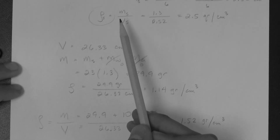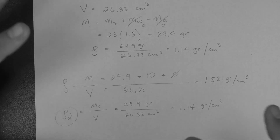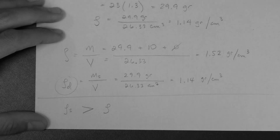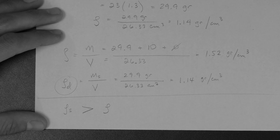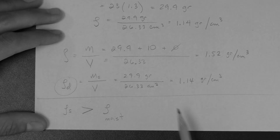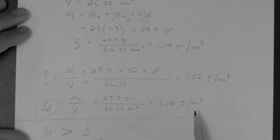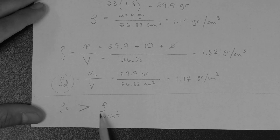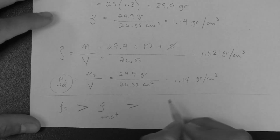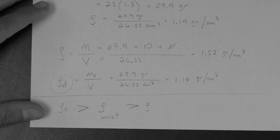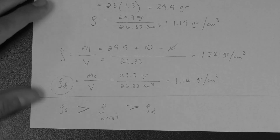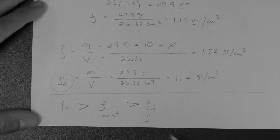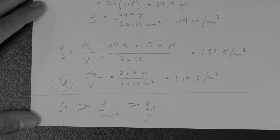Which of the three is highest? The highest, always, for soil is rho-s — the mass density of solids. Then comes the mass density of any moist or saturated soil, such as 1.52 in this case. And finally, the dry density. If the soil is dry, then the dry density and the density of the dry soil are the same. Hopefully this makes sense.